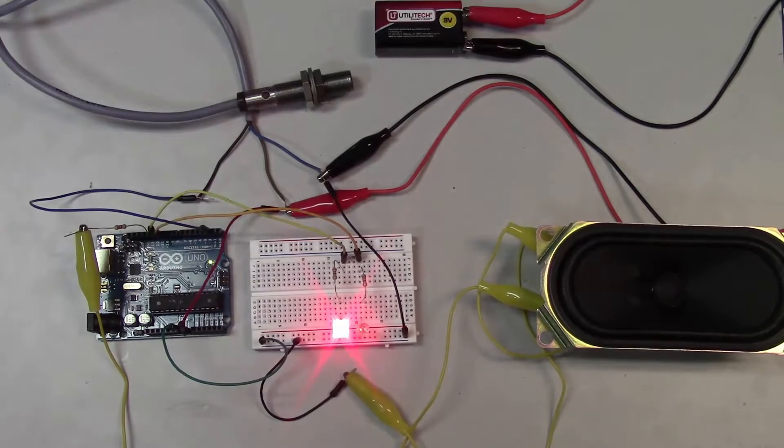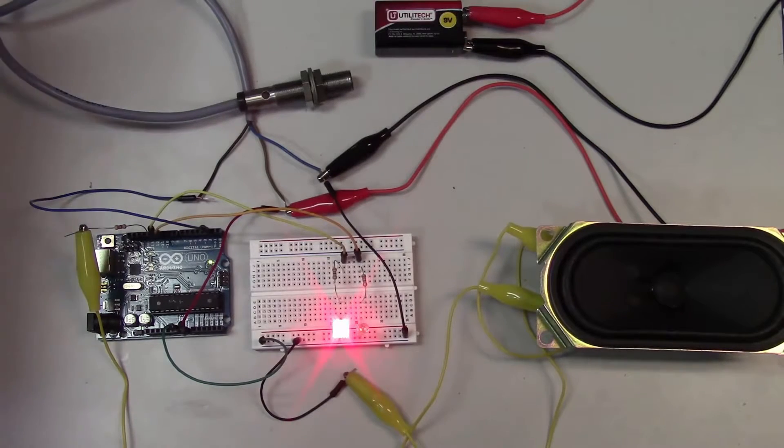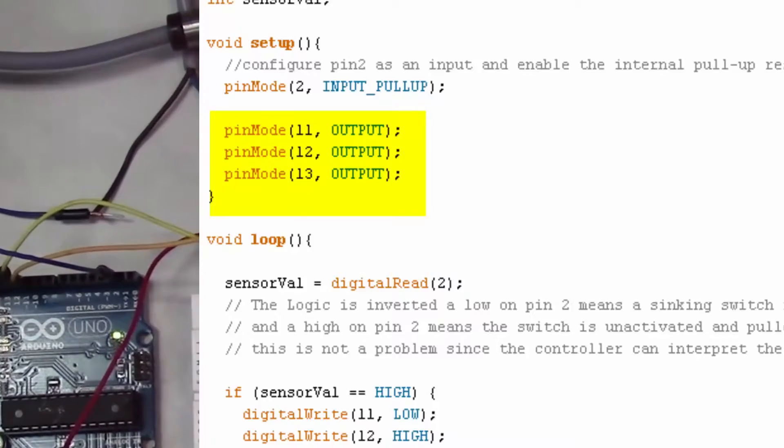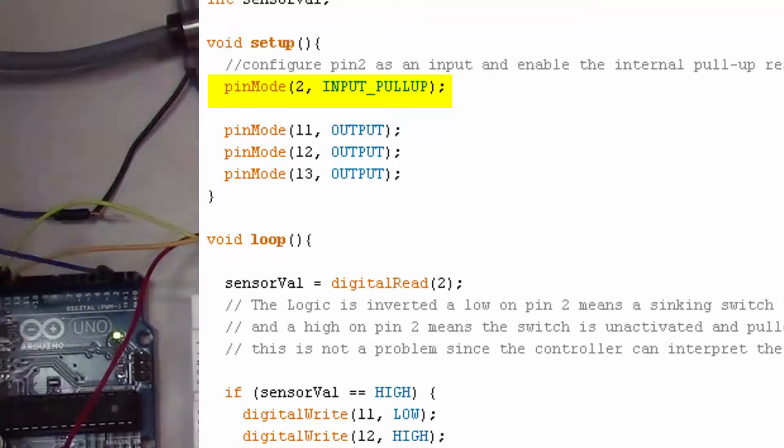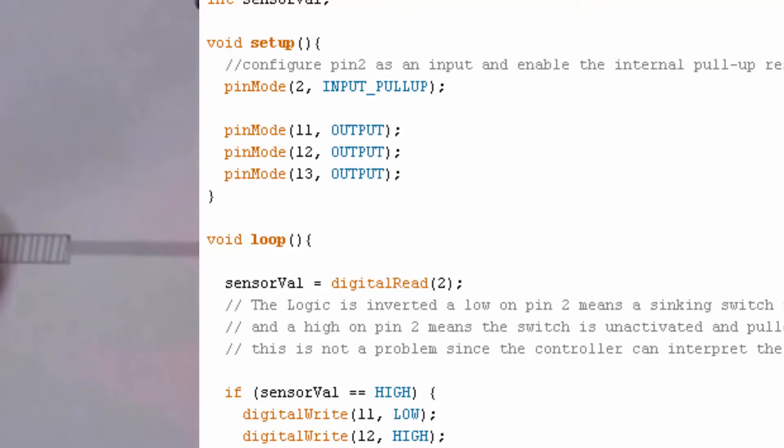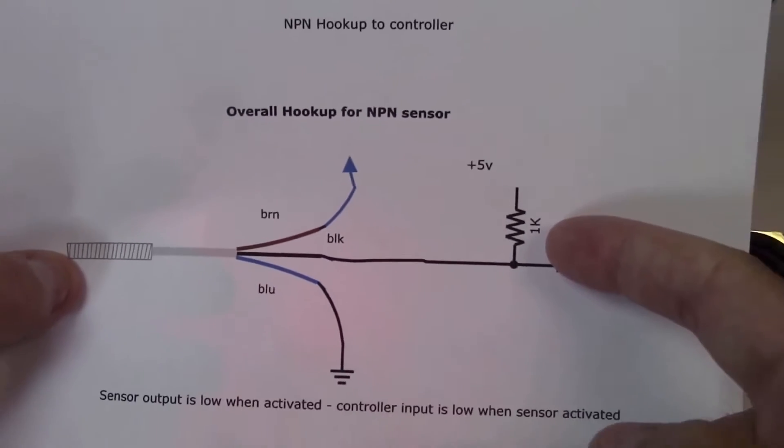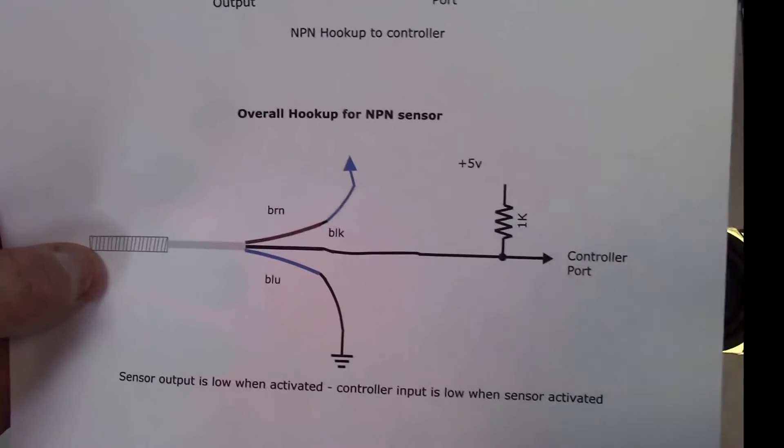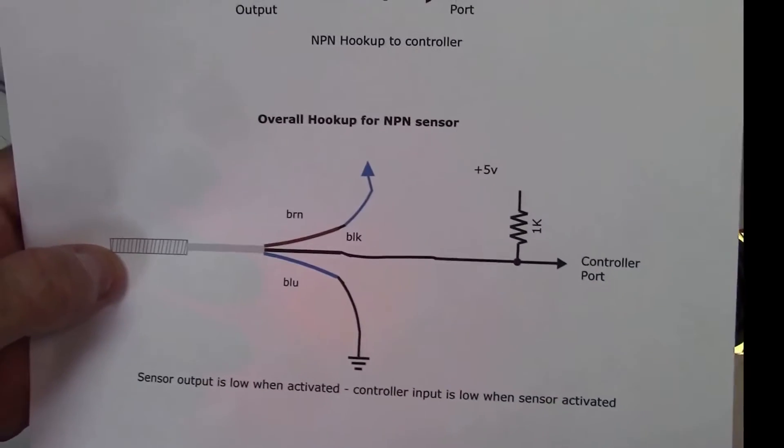As far as our program goes, all we're really doing is setting up pins 11, 12 and 13 as outputs, and pin 2 is input. It's important that we set up pin 2 as an input pull-up pin, because we're using a resistor that's internal to the Arduino. This turns out to work out real well. It means we don't have to put a resistor in there.